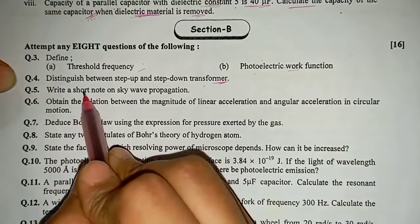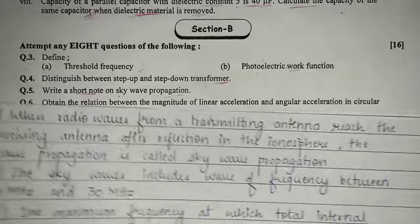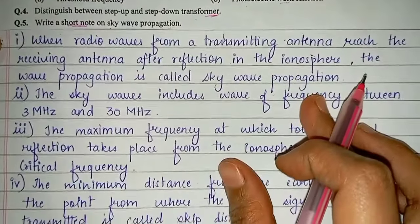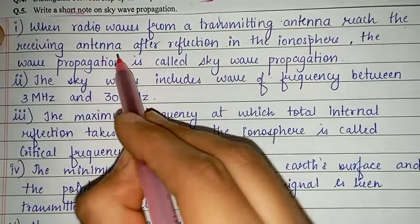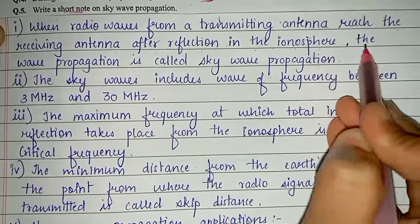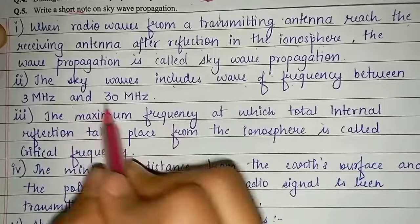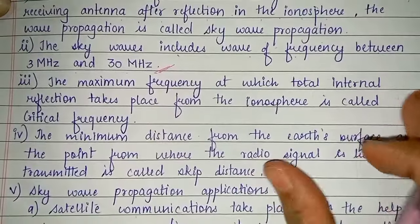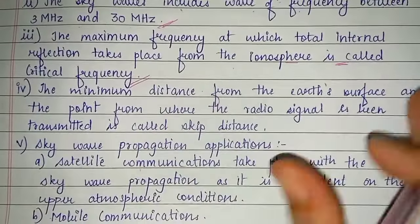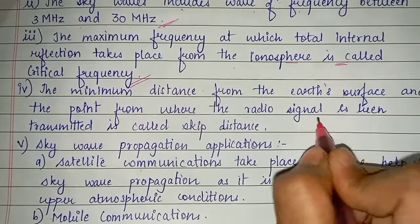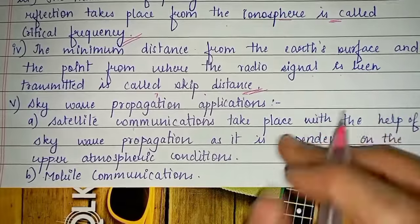Question number 5: write a short note on sky wave propagation. Radio waves from a transmitting antenna reach the receiving antenna after reflection in the ionosphere — this is called sky wave propagation. Sky waves include frequencies between 3 MHz to 30 MHz. The maximum frequency at which total internal reflection takes place from the ionosphere is called the critical frequency.